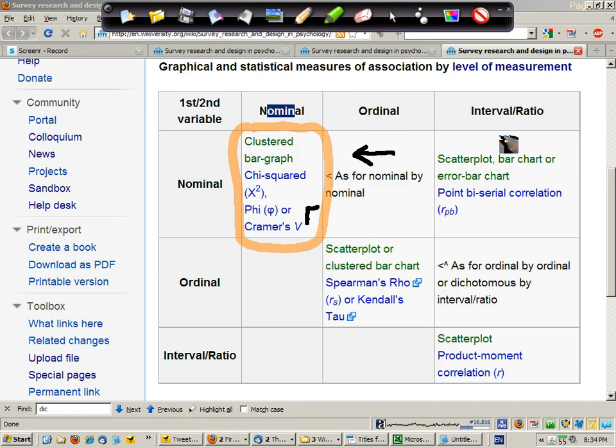The next option is the situation where we have nominal data, but in this case, it would need to be dichotomous, only two levels, and the relationship between a dichotomous and interval ratio variable can be assessed using a point-biserial correlation, which is just a normal correlation applied to this particular situation, so a Pearson product moment correlation, hence the subscript. And we can use either a scatterplot, bar chart, or error bar chart.